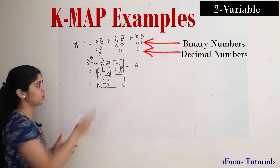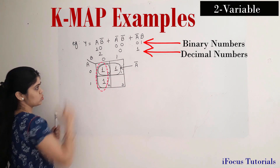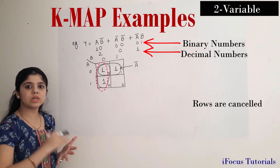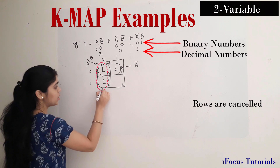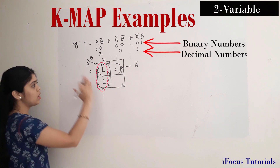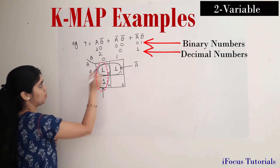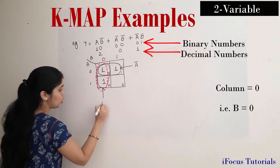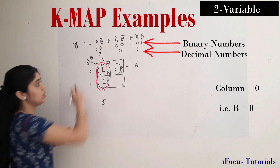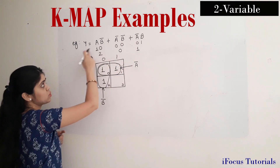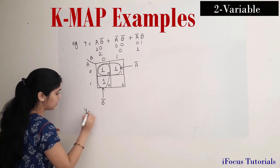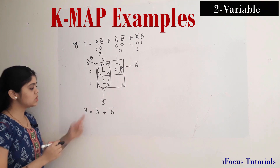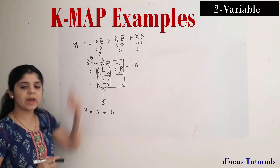To write the expression for the second pair, I will read the rows. Observing both rows here, there is no common term — 0 and 1 get cancelled — so I can't write a variable in terms of A. Next I observe the column: the column is represented by a 0, and this 0 is indicated by B. So I will write B bar. The final simplified expression is Y equals A bar plus B bar.